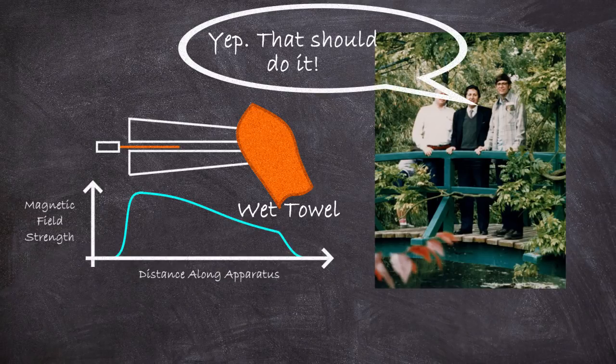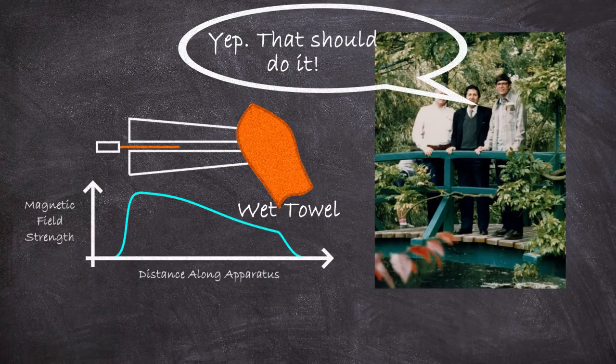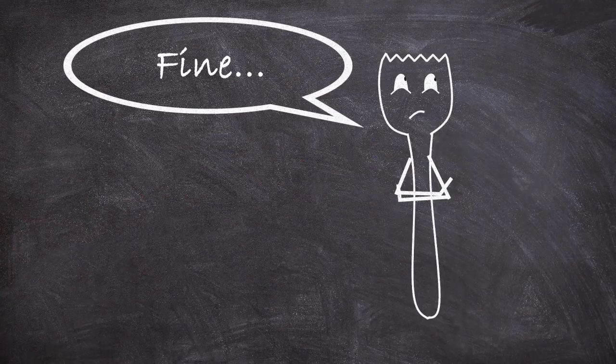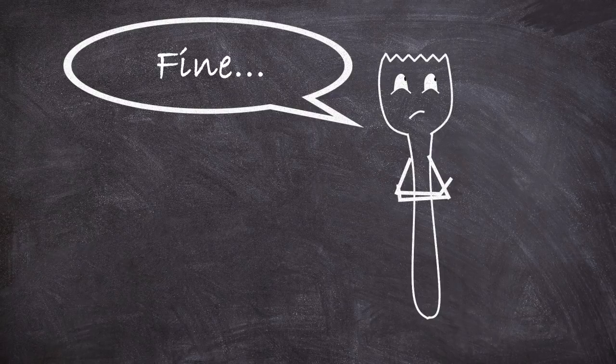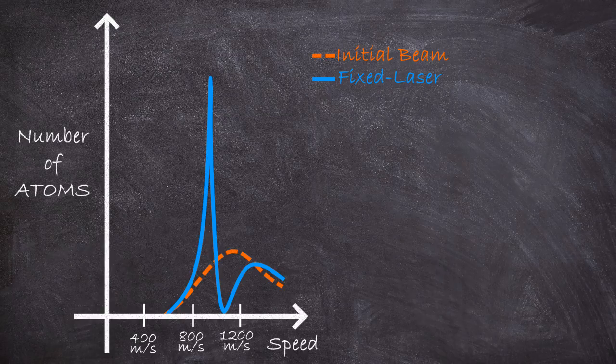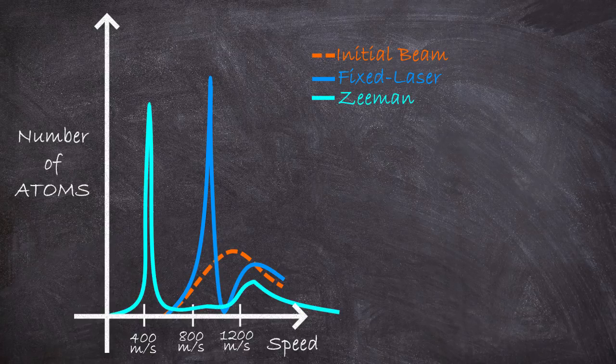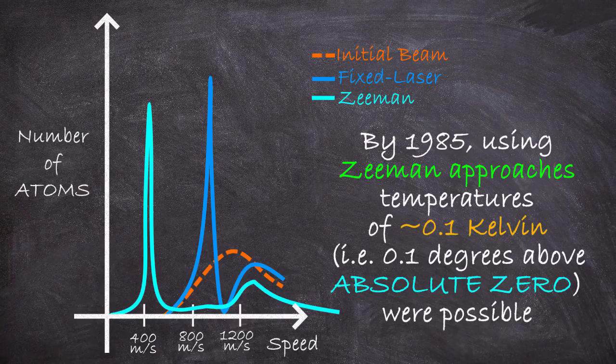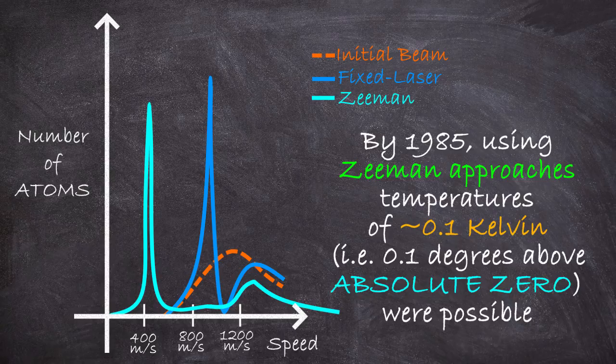But with these easy-to-dream-up-but-hard-to-implement ideas, you could take a distribution of speeds like this and bring it to this. And by 1985, such approaches were cooling atomic beams down to temperatures of around one-tenth of one degree above absolute zero, and about 25 times colder than the original atomic beams.